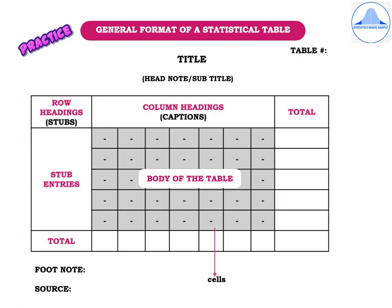The general format of a statistical table is an important two-marker. As you see on the screen, every statistical table will have a table number, then the title followed by the headnote or subtitle.